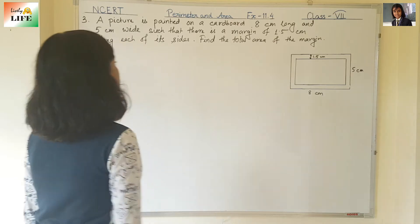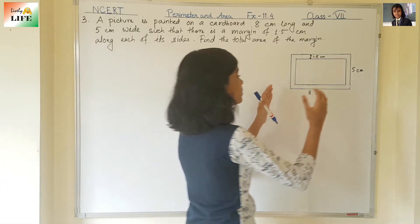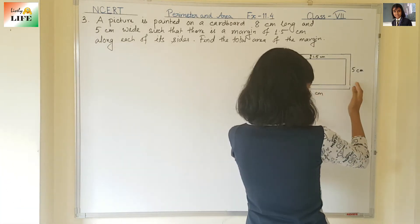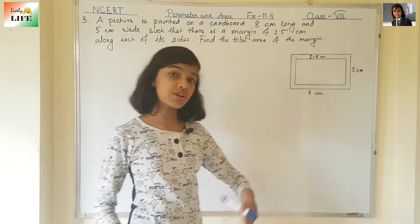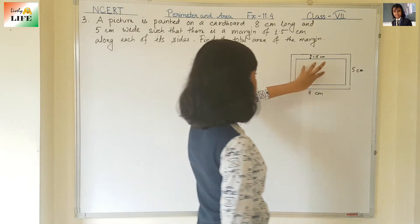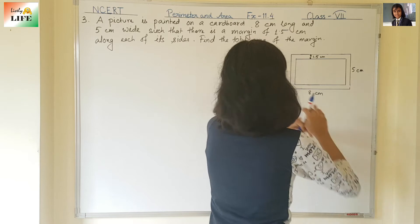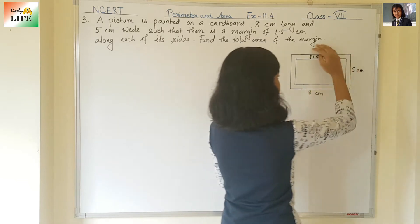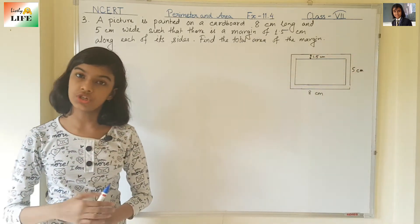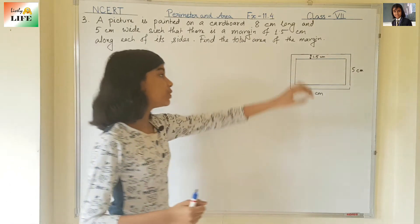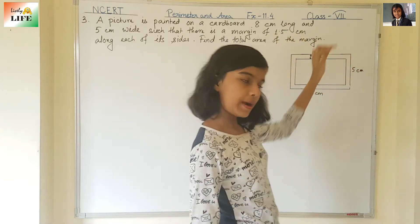For this, what do we need to do? We need to find out the area of the cardboard and then subtract it by the area of the picture — area of cardboard minus area of picture — and then we are going to get the area of the margin.